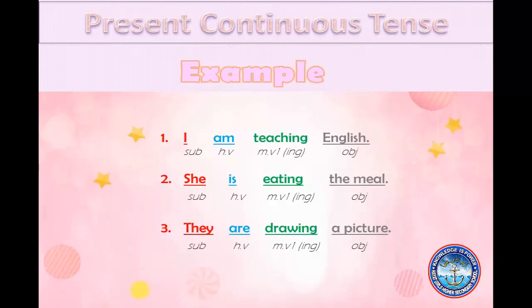After understanding the structure, here are the examples. First: I am teaching English. Here, I is the subject, and with I we always use am as a helping verb. The main verb is teaching, which shows continuity in an action, and English is the object.